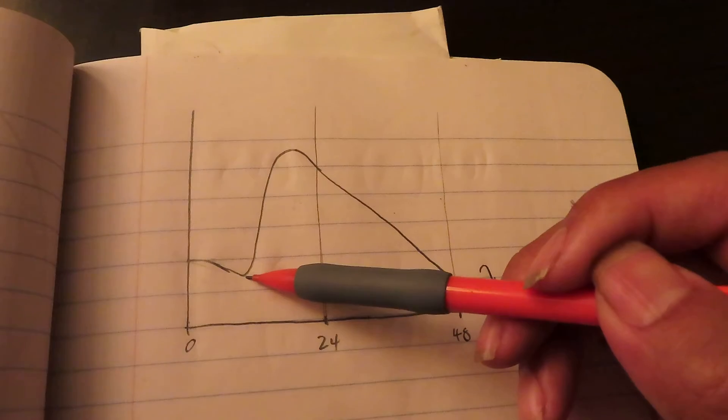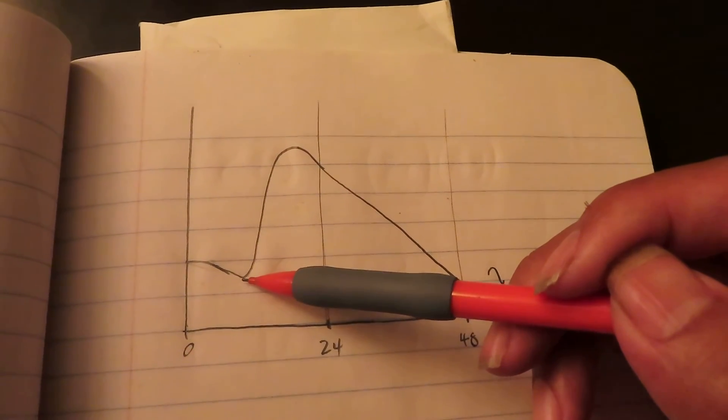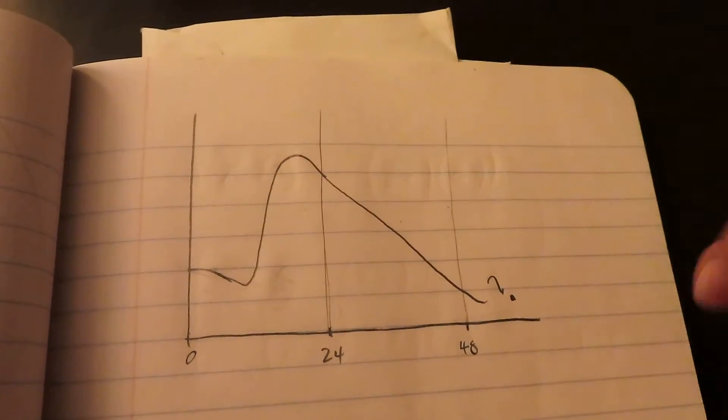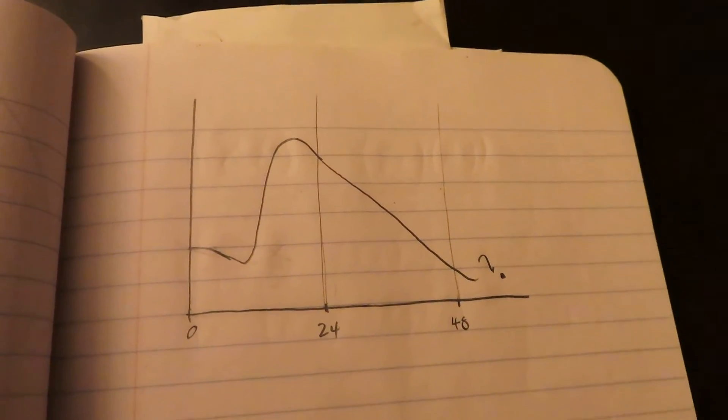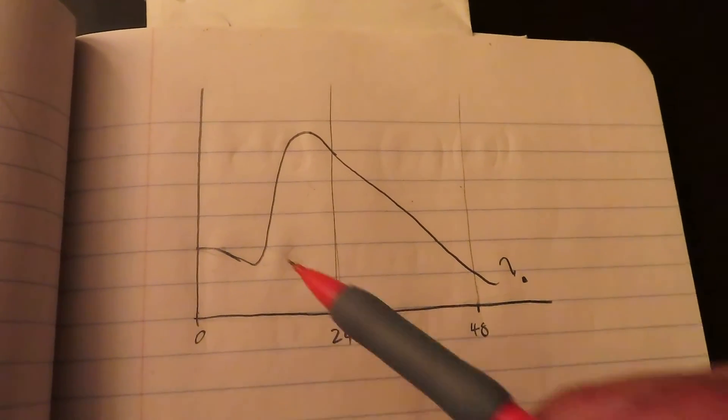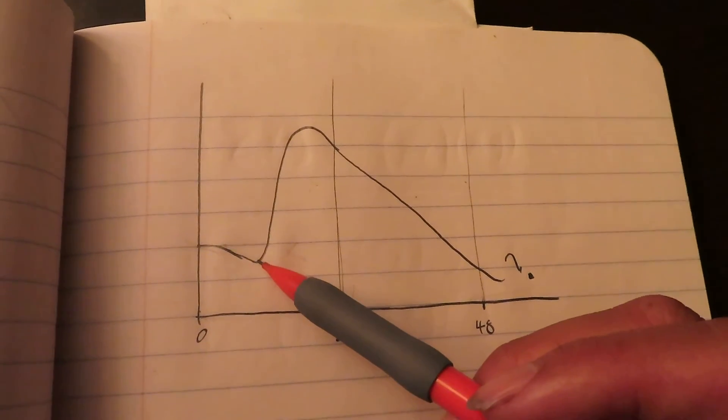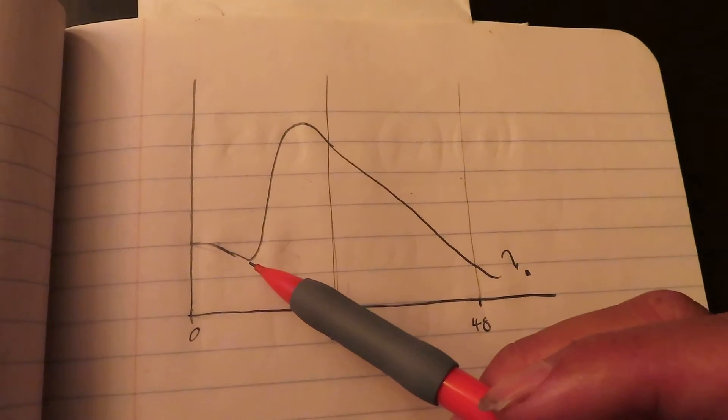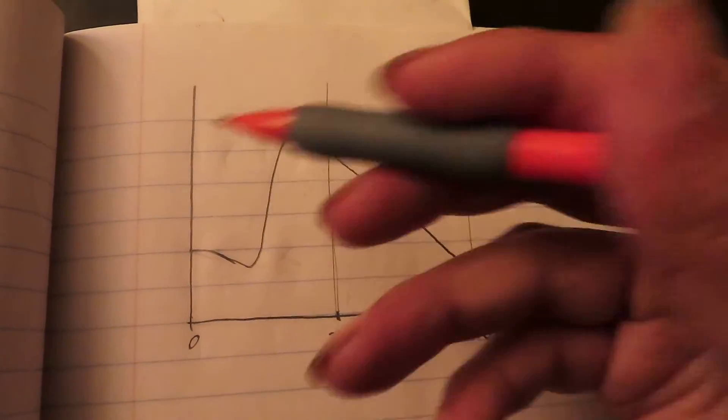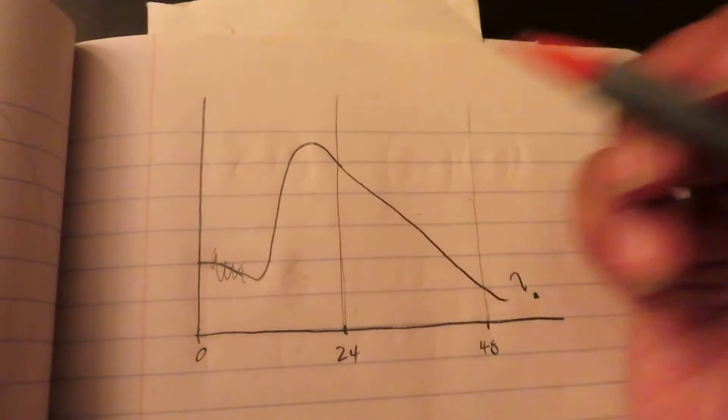Now usually the low point is around 10 to 12 hours where you have to really push through it. At the beginning, 0 through 8, you've got psychological cravings sometimes. I don't get those anymore because I've been doing it for so long. And over here you do start to feel hungry, maybe a little bit anxious. But usually this is sleep right here, so I don't even know if that exists.